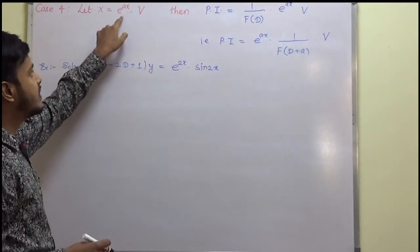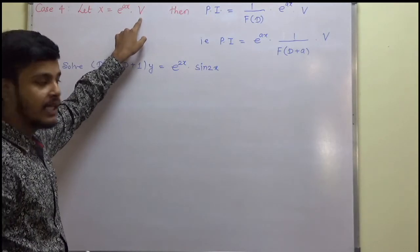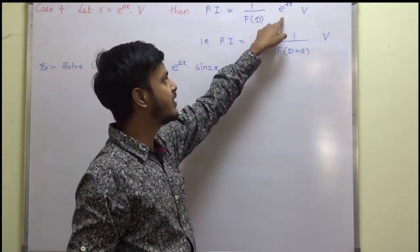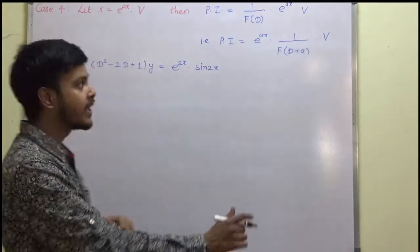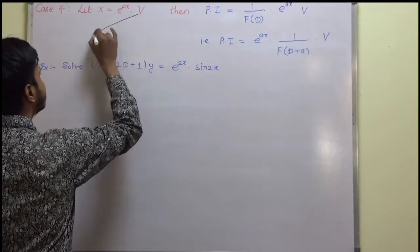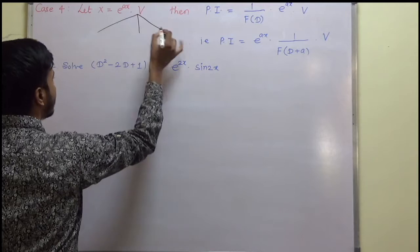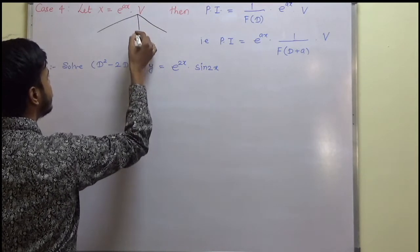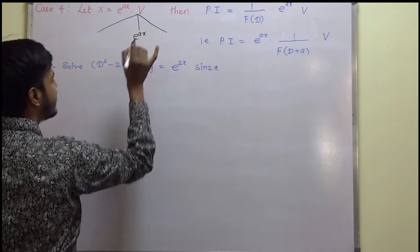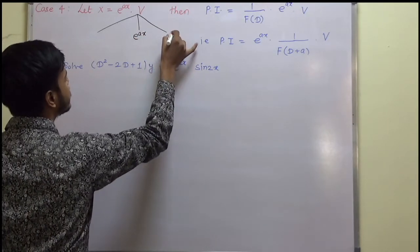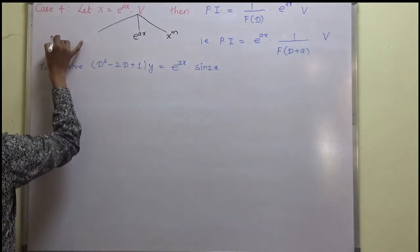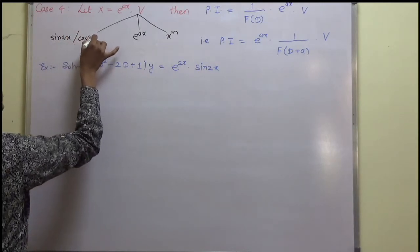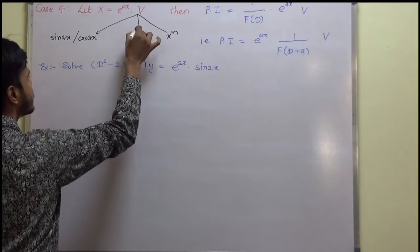Let x equal to e to the power ax into V. If this is the case, then PI is equal to 1 upon f(D) into e to the power ax into V. Now, there are variations in V. This function V can be e to the power x, it can be x to the power m, or it can be sin x or cos x. So these are the possibilities.